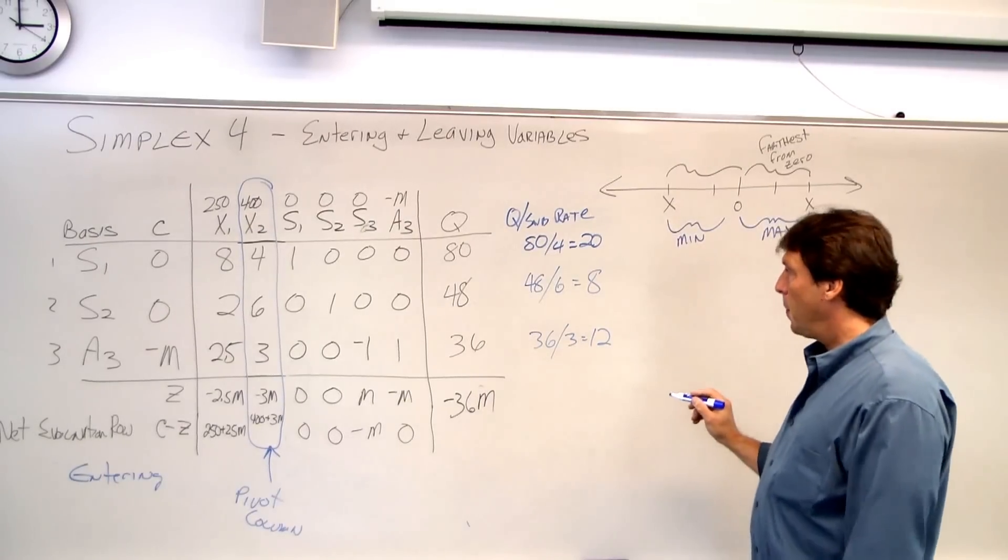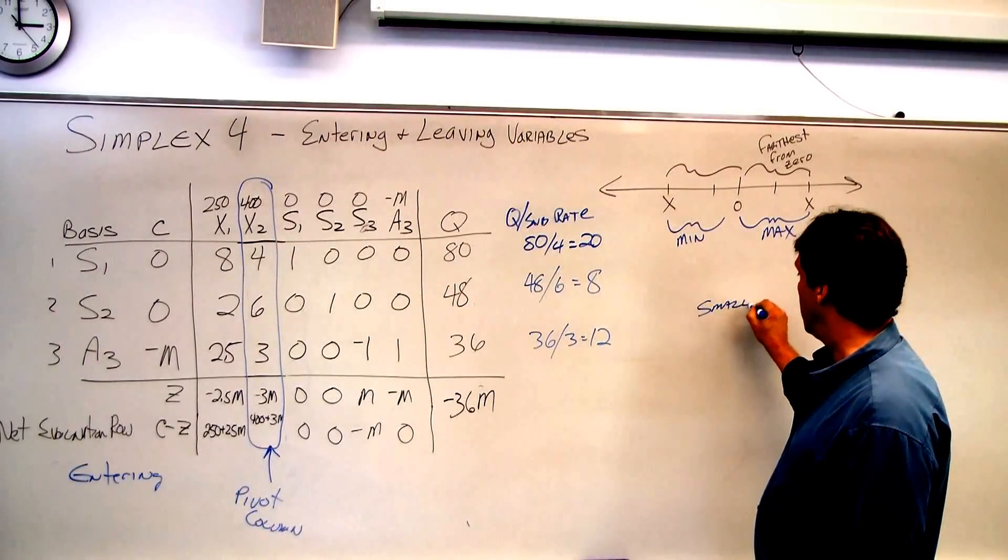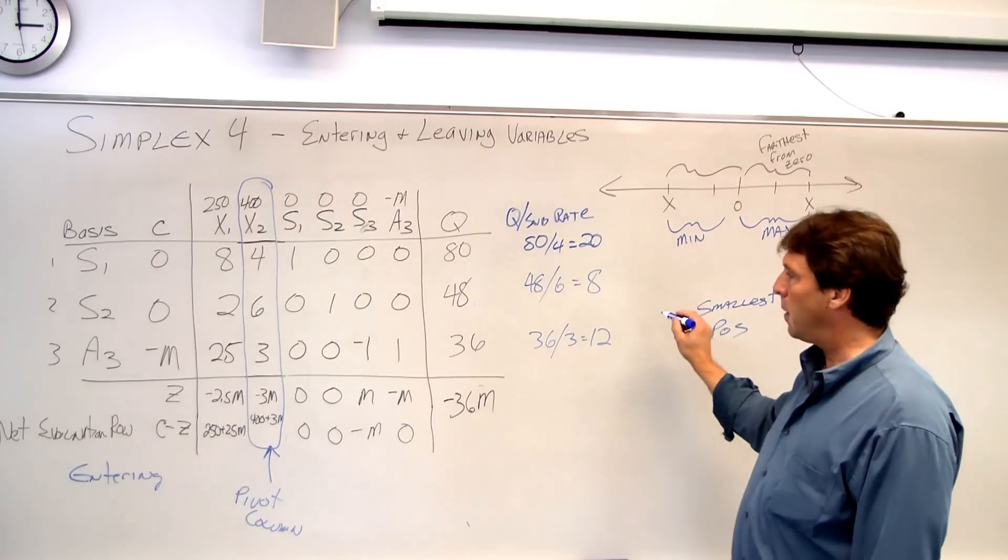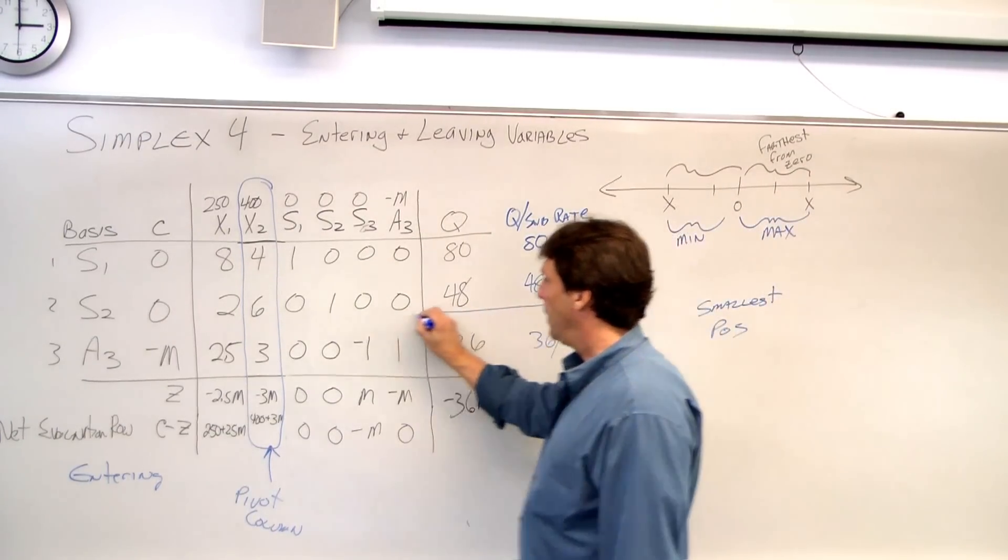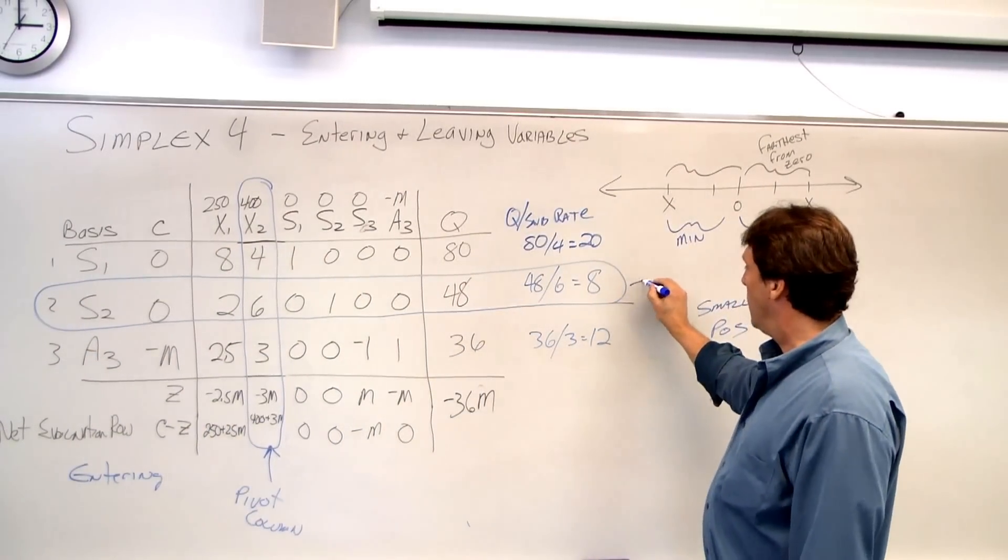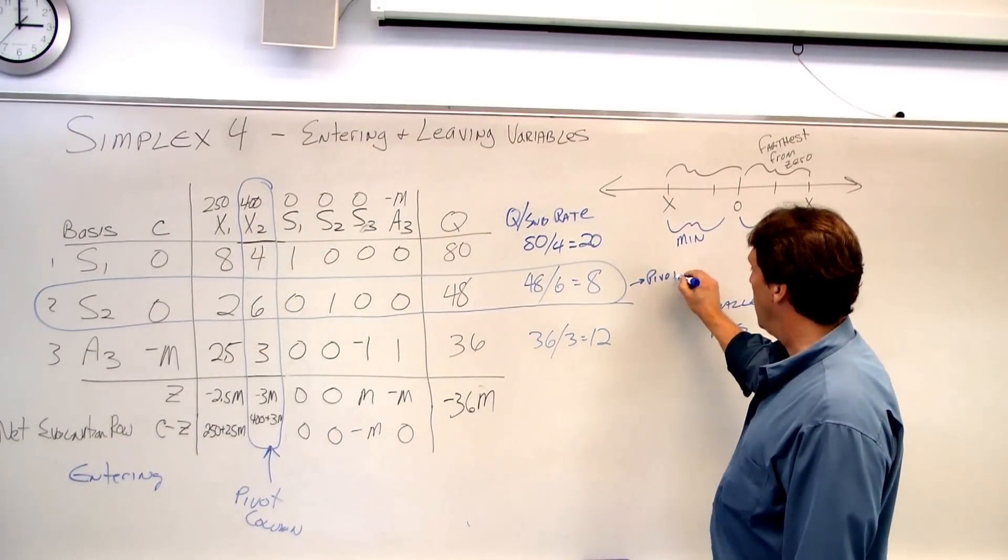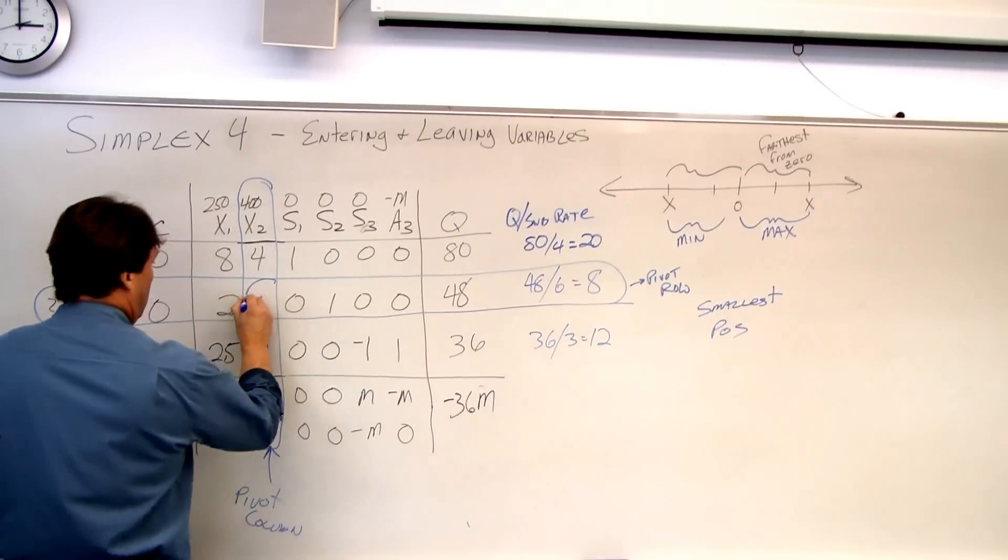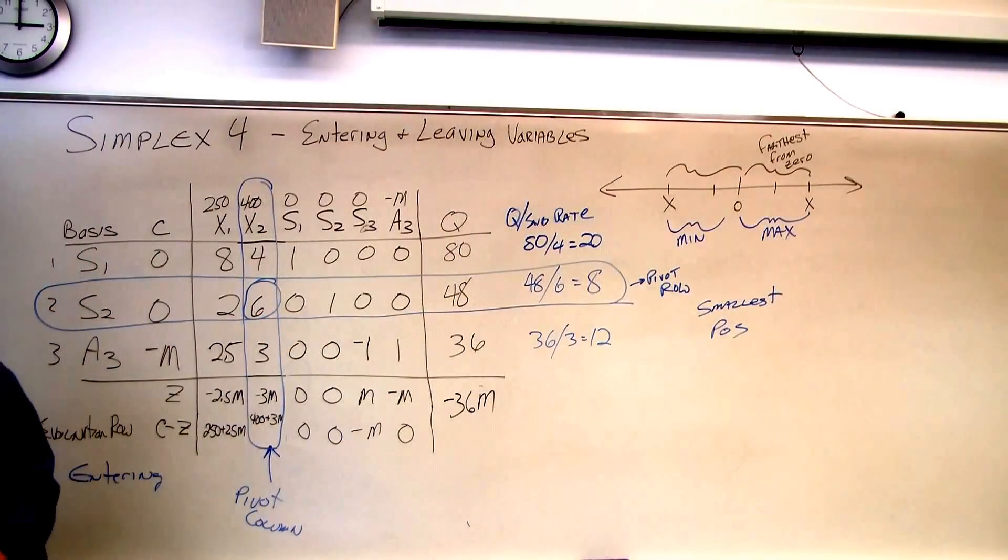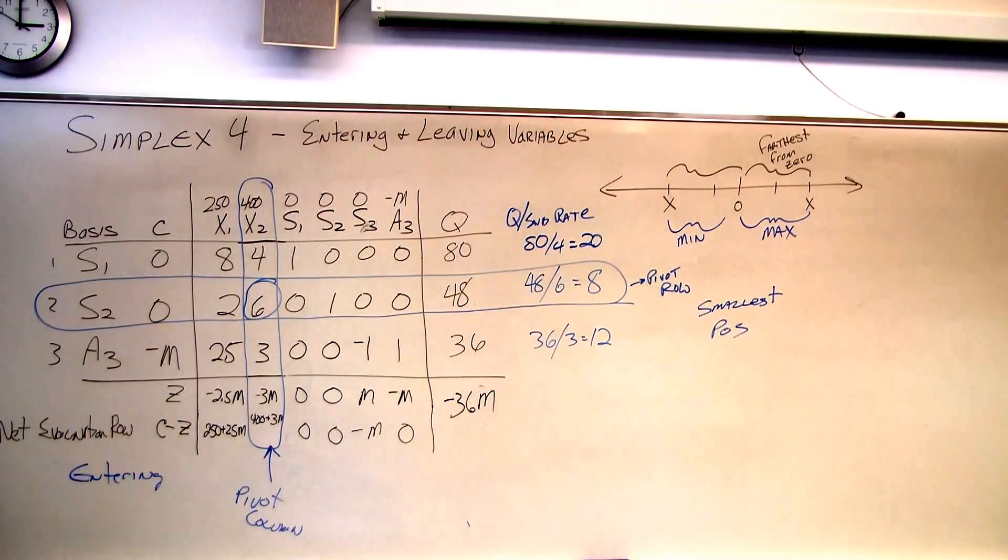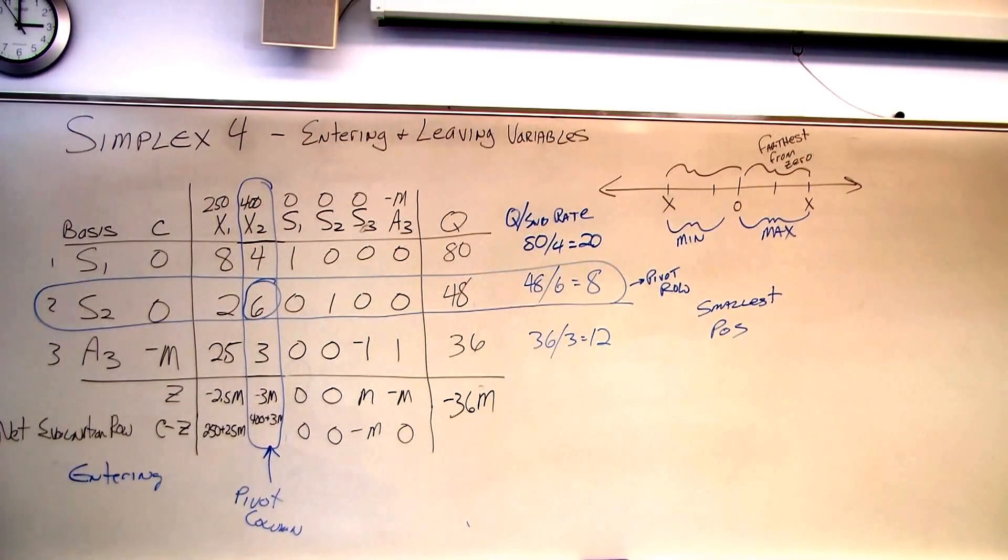What we do is we take the smallest positive number. So my smallest positive here is my S2. This is my pivot row. That's my pivot number. All right, so we identify which are entering and leaving variables. Next week, we go on to calculating an improved solution.